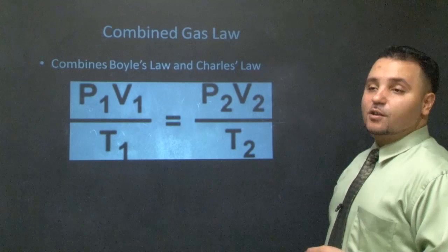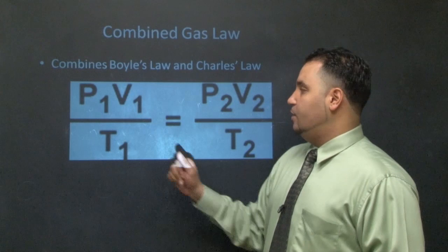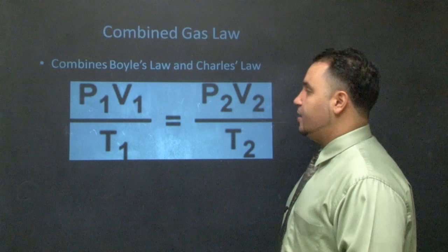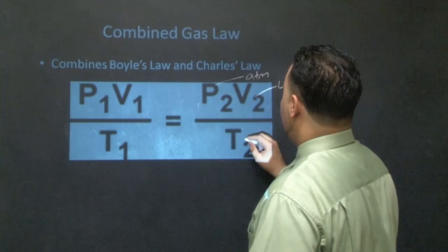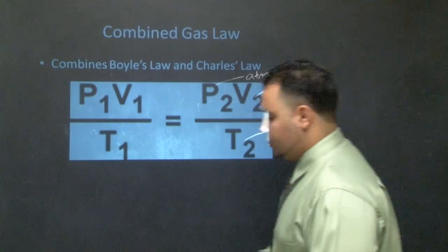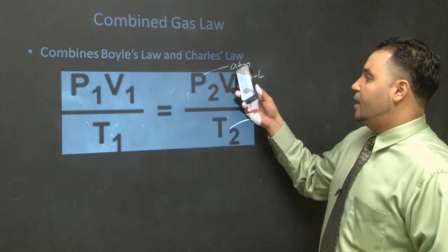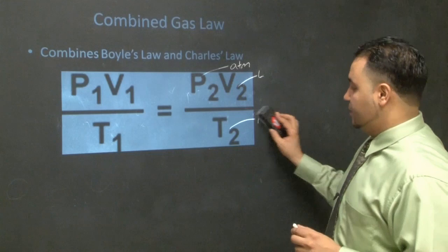Combining Charles' Law and Boyle's Law gives the combined gas law: P1V1/T1 = P2V2/T2. Keep your units consistent: pressure in atmospheres, volume in liters, temperature in Kelvin. They'll try to trick you — if given milliliters, convert to liters; if given another pressure unit, convert to atmospheres; if given Celsius, convert to Kelvin.